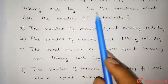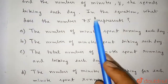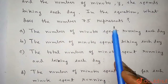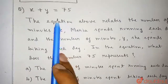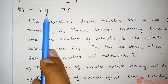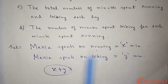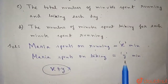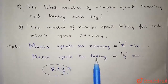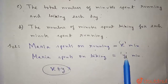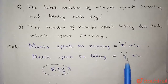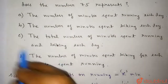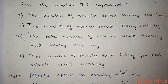In the question it was asked: in the equation, what does the number 75 represent? Since x is the minutes Maria spends on running and y is the minutes Maria spends on biking, x plus y equals 75 is the total number of minutes Maria spends on running and biking. So option C is the correct answer.